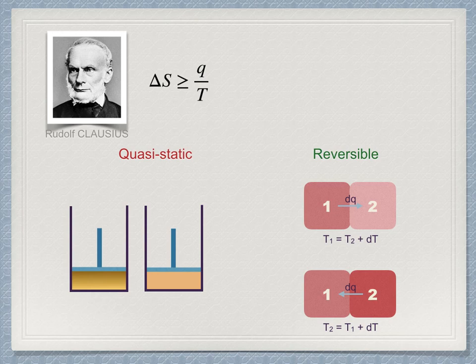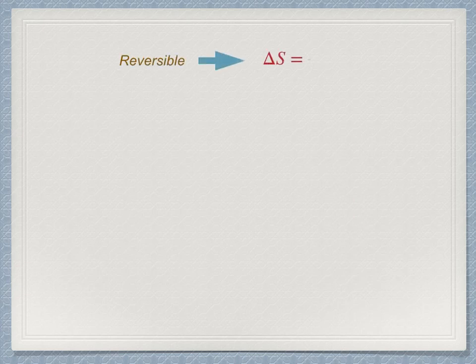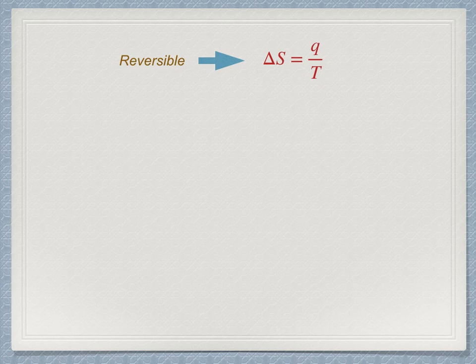In fact, we will find that we can capitalize on the state function nature of entropy and combine a series of reversible steps to calculate entropy changes in irreversible processes. These reversible processes become our fundamental building blocks. It is in a reversible process when the equal sign in Clausius' expression applies to the relationship between heat and entropy.